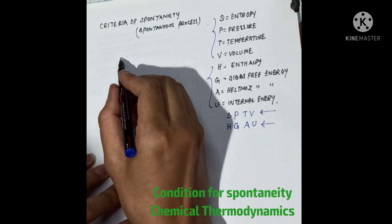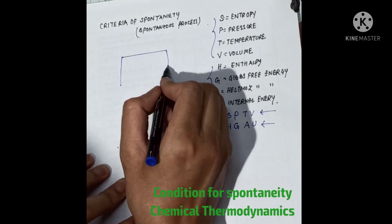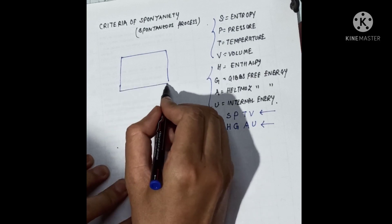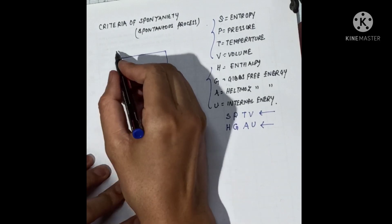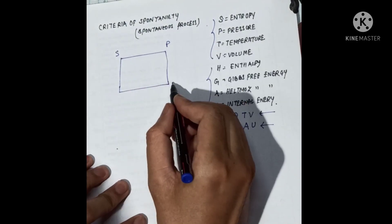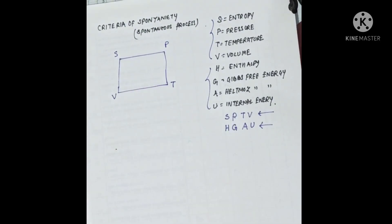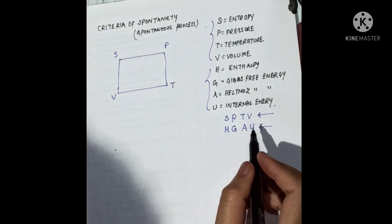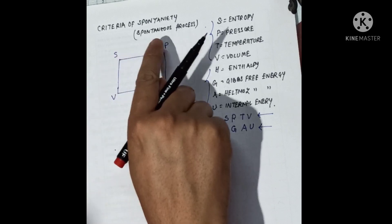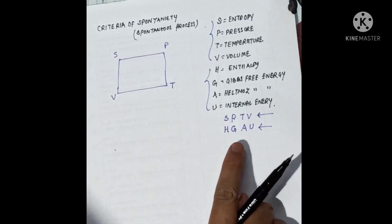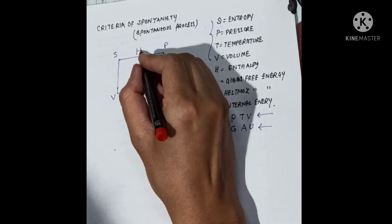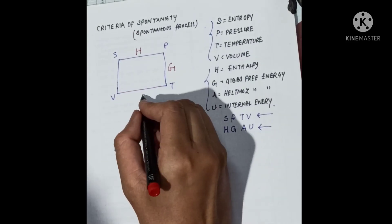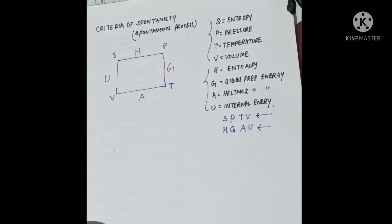Let's draw this in this way. I'll draw a square or rectangle. Here, I'll represent SPTV first. And the next is HZAU. So I am drawing in this direction. SPTV, and in the same way, HZAU. I'll write here, HZAU.